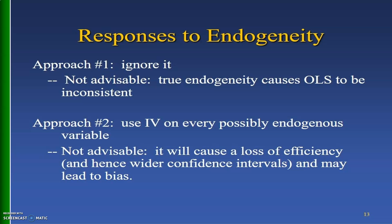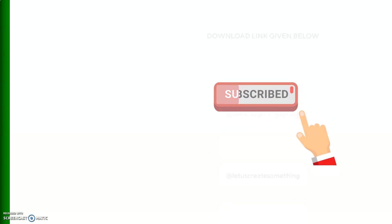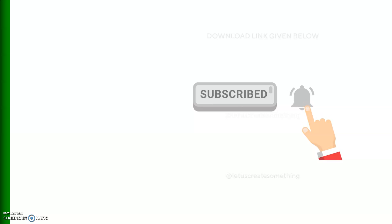The third approach is differencing. Suppose the endogeneity is fixed over time, such as measurement error or an omitted variable, and data is observed across two time periods. In that case, a difference-in-differences (DD) model can be used, where we subtract the time-1 (before) values from the time-2 (after) values, and the endogenous variable drops out.